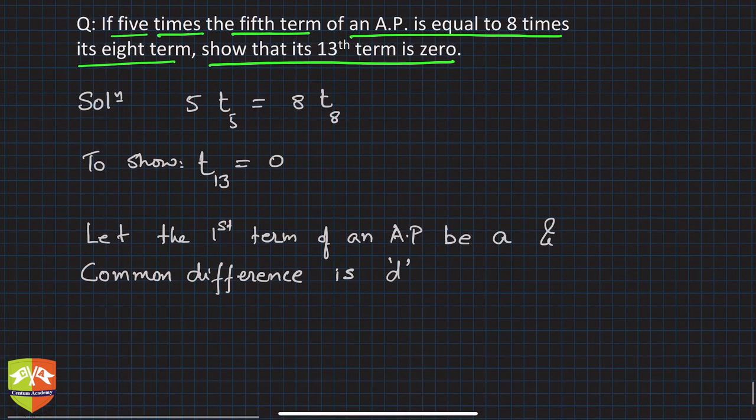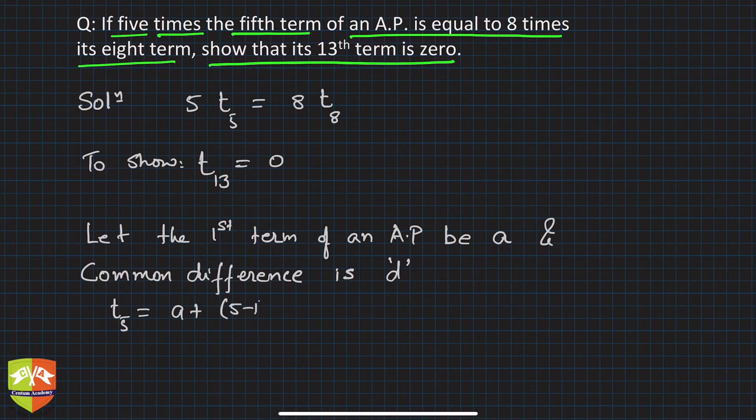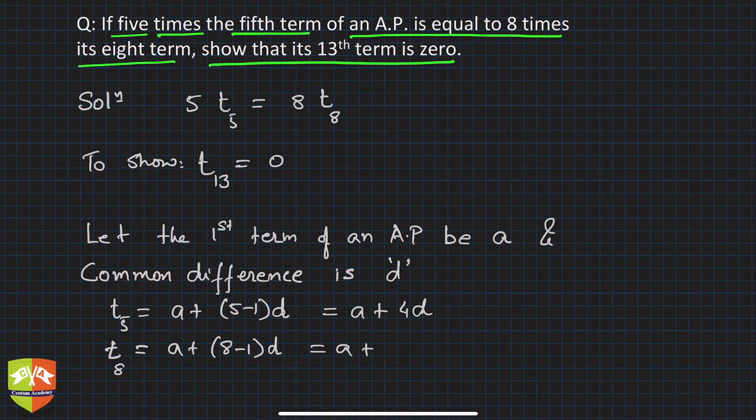Then t₅, the fifth term, is nothing but a + (5-1)d, which is a + 4d. And t₈ is equal to a + (8-1)d, that is a + 7d.